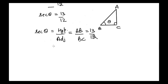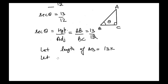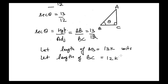From this information, we can suppose the length of side AB equal to 13k and the length of BC equal to 12k. It can be any unit — centimeters, meters, kilometers — so just for generalization we write 13k units.